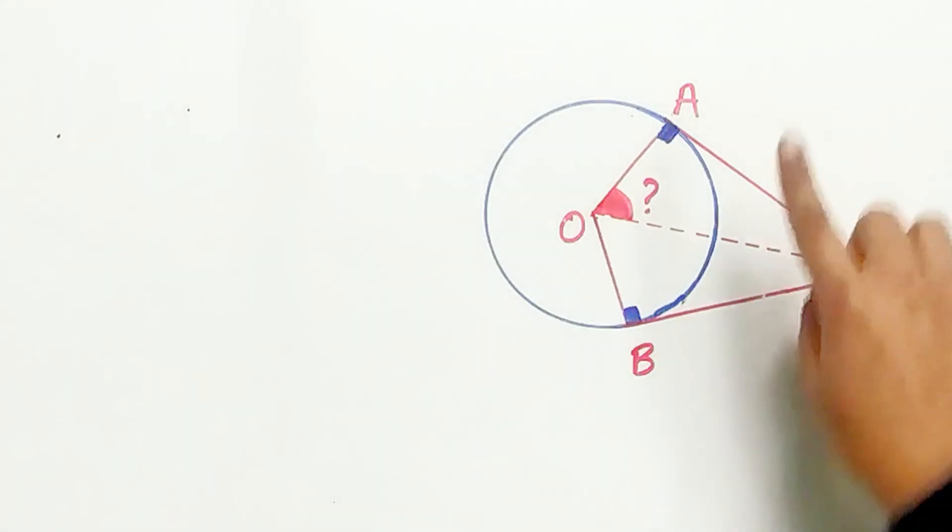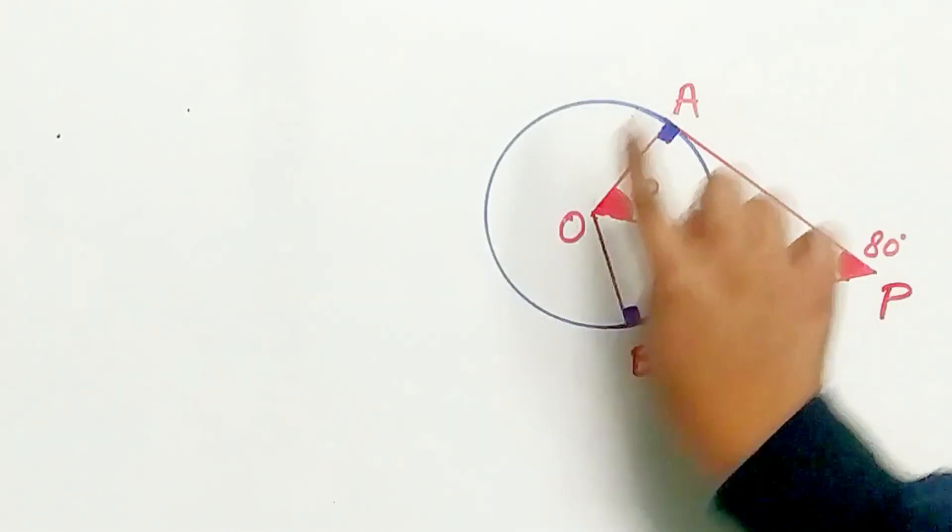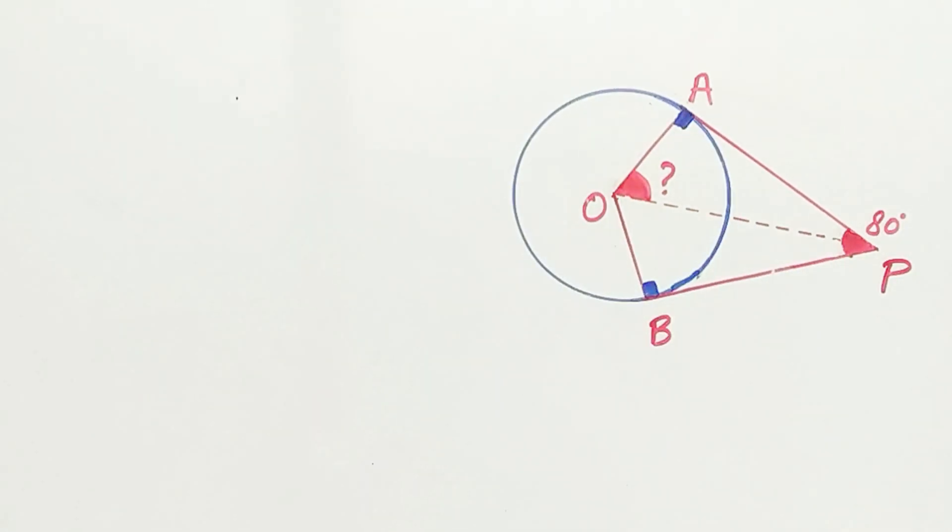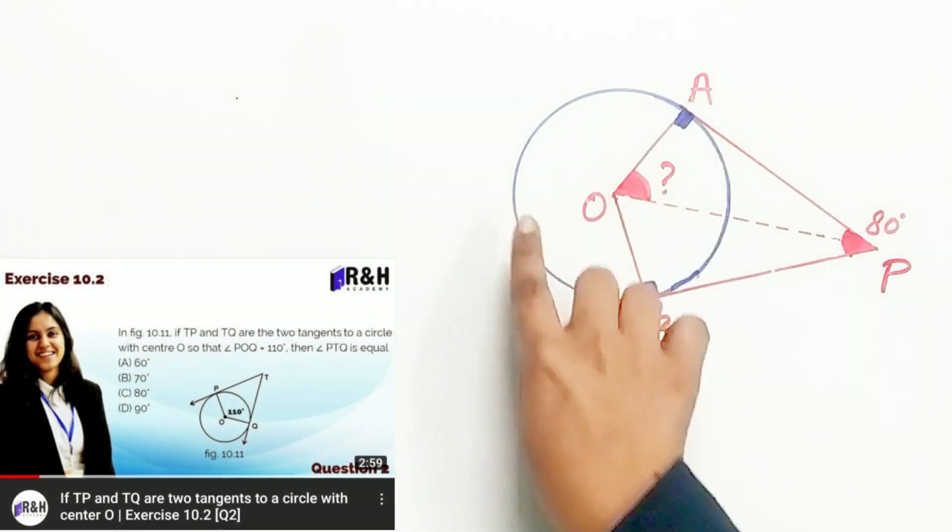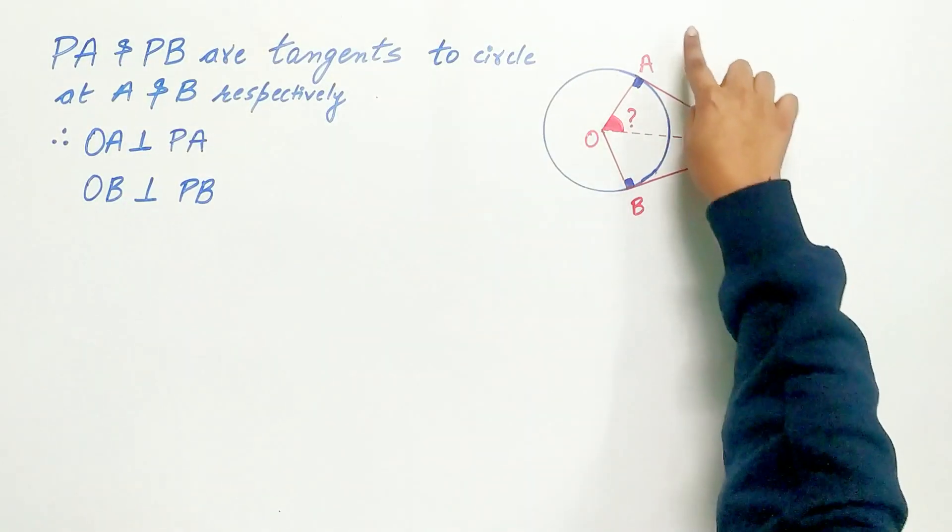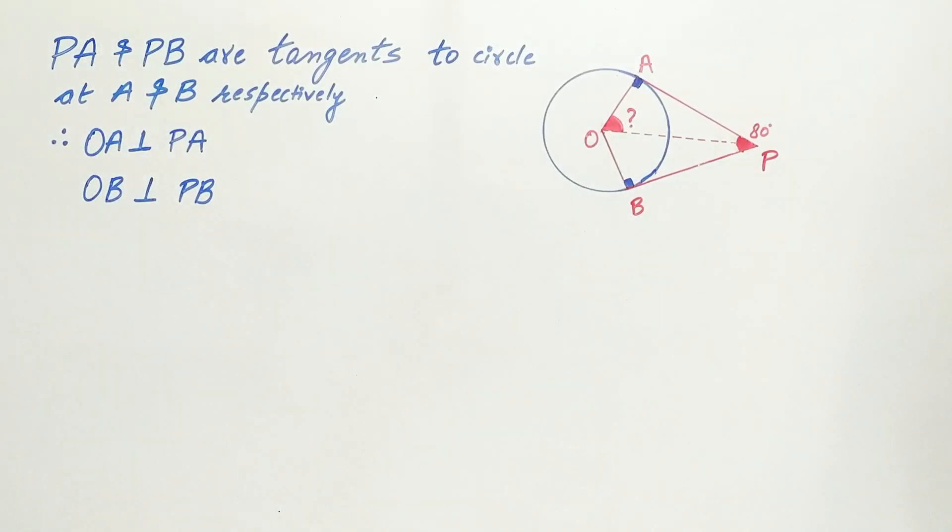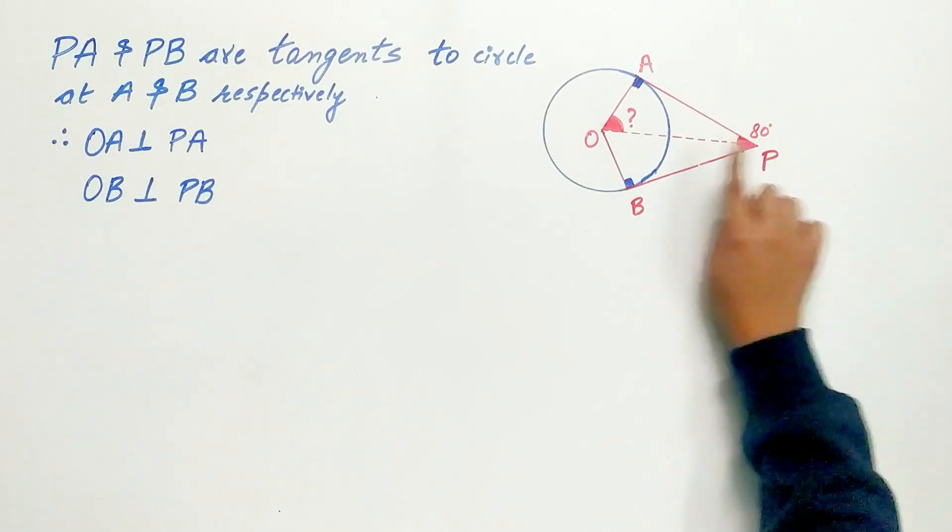Our first step is to find the angle AOB, then we'll find angle POA. Remember how we calculated angle AOB in the previous video? Firstly, we will find out angle AOB, then we'll find angle POA.